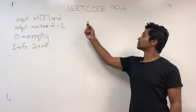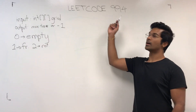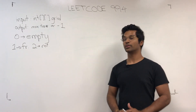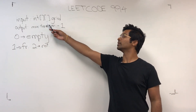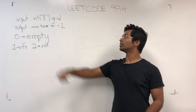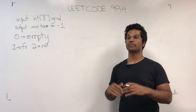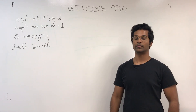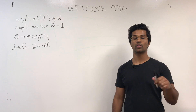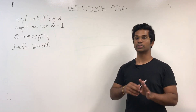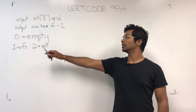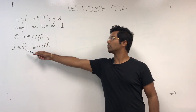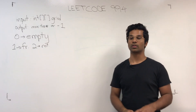Hi everyone. Today we're going to be solving LeetCode number 994, Rotten Oranges. The input is a 2D grid of integers, and the output is the maximum amount of time it takes for all the fresh oranges to rot. If there remains at least one fresh orange after all iterations, we return negative 1. They denote 0 as an empty cell, 1 as fresh, and 2 as rotten.